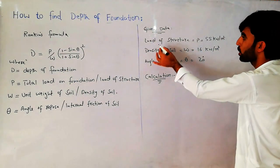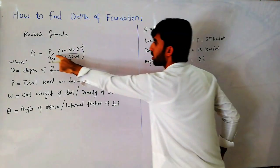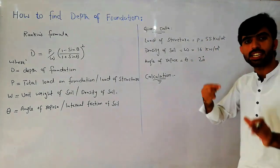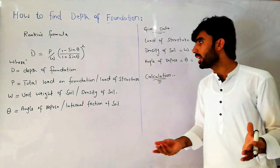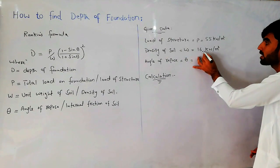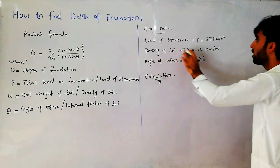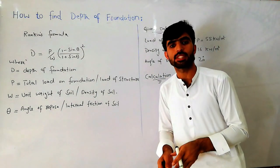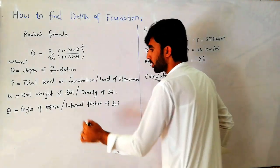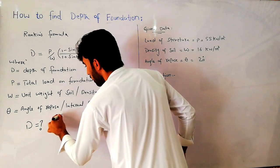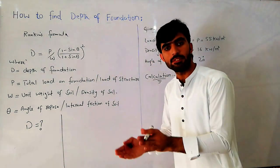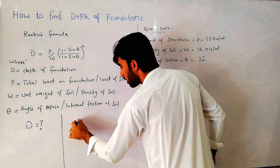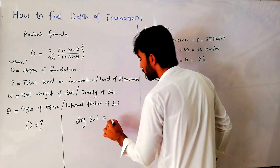Let's find depth of foundation for the given data. The load of the structure is P = 55 kN per meter square — you can change this based on your design load. The density of soil is given as W = 16 kN per meter cube. Note that different types of soil have different densities.